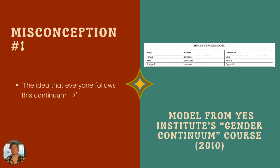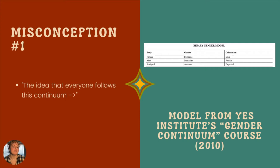The first misconception is the idea that everyone follows this continuum from Yes Institute's gender continuum course — the idea that if you're born female, your gender is going to be feminine and your orientation is male. So if you're born female, you have to present feminine and be attracted to males, and vice versa for males. As we know, this is not true.